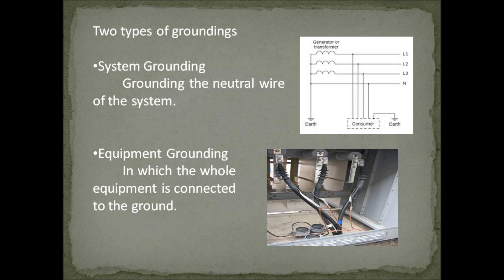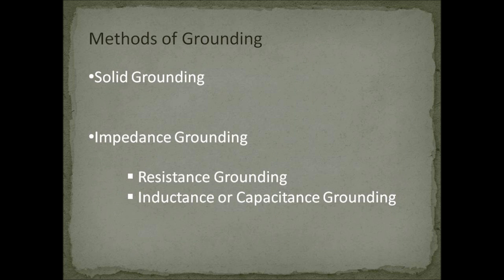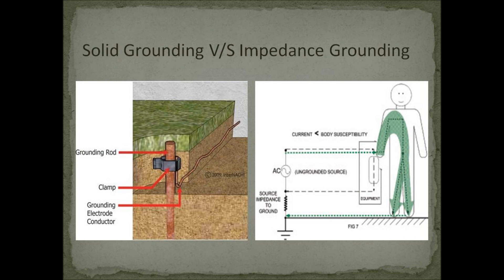Equipment grounding connects the whole equipment to ground or places it at ground potential. The two grounding methods are solid grounding — grounding without any impedance connected between the wire and ground — and impedance grounding — grounding with an impedance intentionally connected between the wire and ground. There are two types of impedance grounding: resistance grounding, where a resistance is connected between the wire and ground, and inductance or capacitance grounding, where an inductor or capacitor is connected. Both solid and impedance grounding schemes have their own importance, with impedance grounding having certain advantages over solid grounding in some cases.